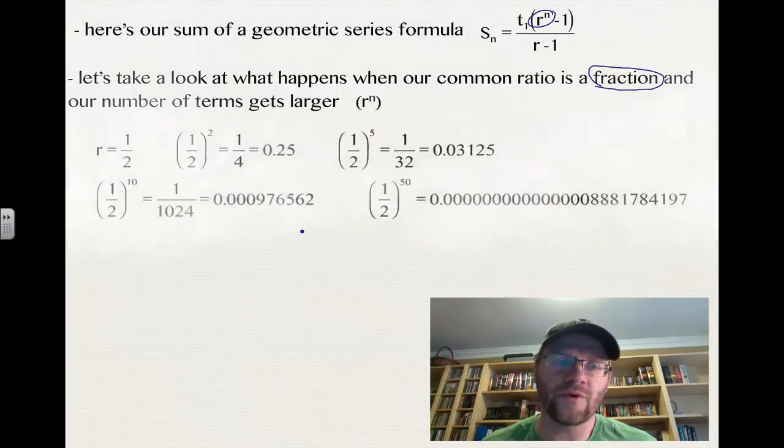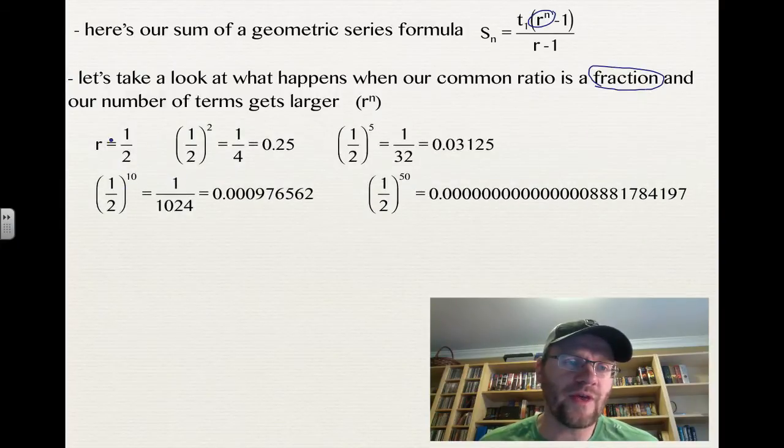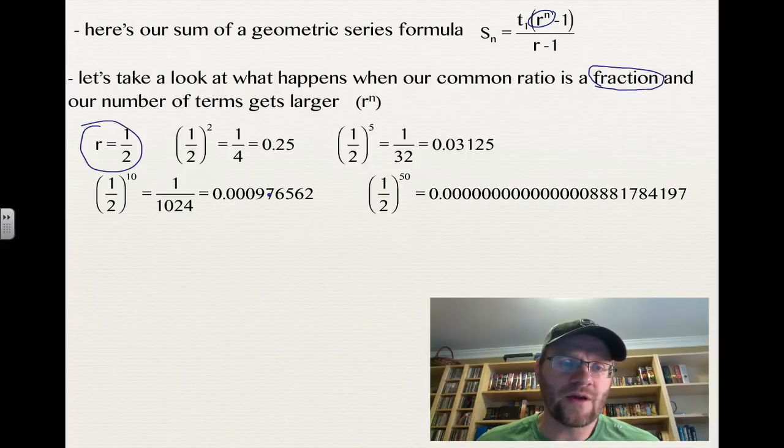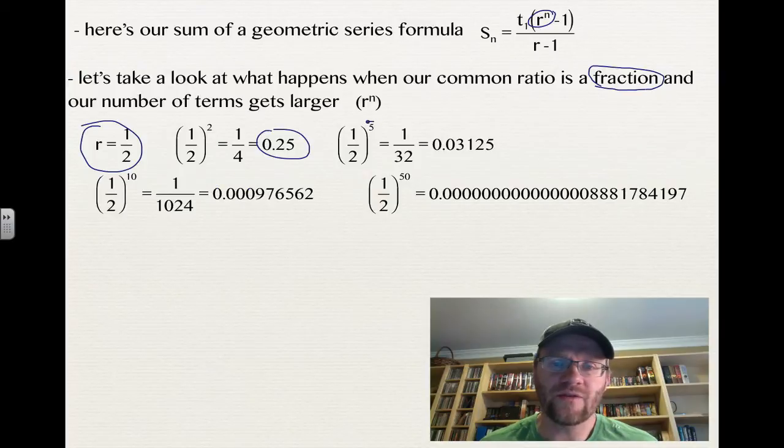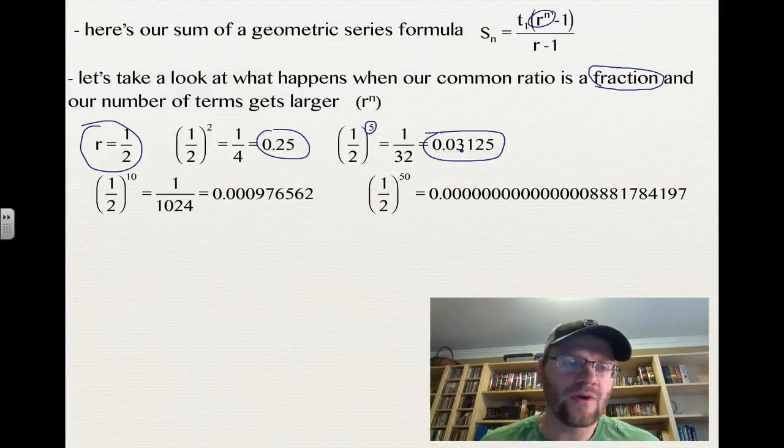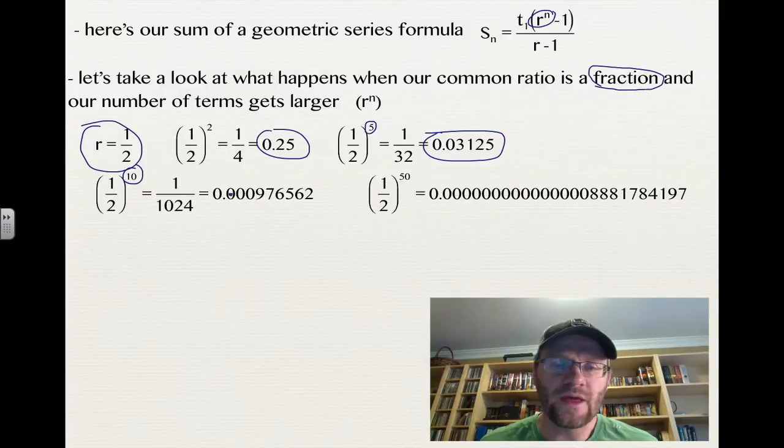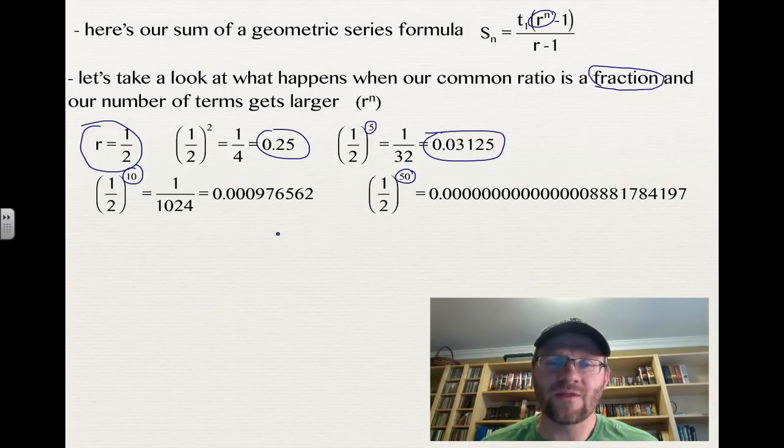If we said that our common ratio is a half, and if we squared a half, that now becomes 0.25. If we take that half and we took it to the fifth power, that now becomes an even smaller decimal, 0.03125. You raise that to the tenth power, and you're getting 0.000. And then if we raise it to the fiftieth power, you get 0.00 blah, blah, blah, blah, blah. As this number increases, the exponent increases, the answer gets really close to zero.